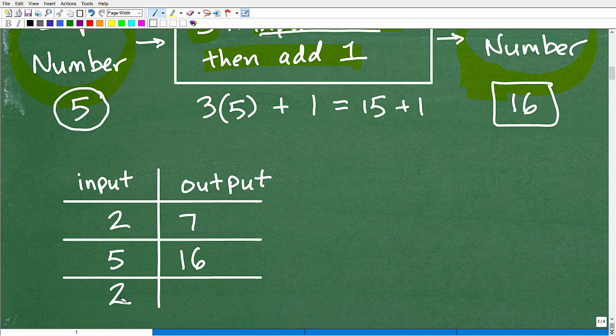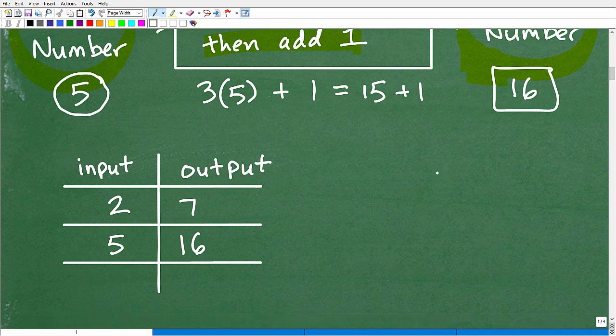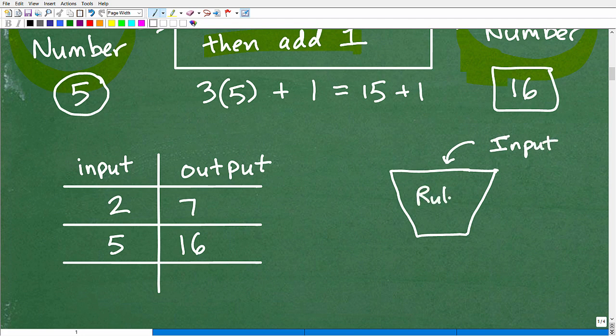Okay. Because two, when I plugged it into the rule only gave me seven and two will only produce that one unique number. All right. So another way to think about a function is the following. Okay. Here we have it. Generally, it's like a function machine. It's another good little model here.